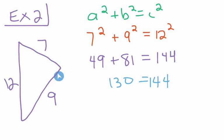130 does not equal 144. And because they are not equal, that tells us that this is not a right triangle. So we do not have a right triangle with this example. So our answer for this one is not a right triangle because 130 does not equal 144.